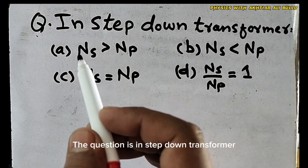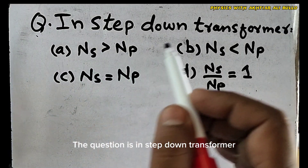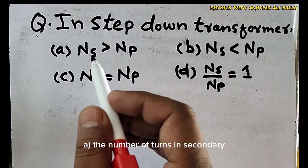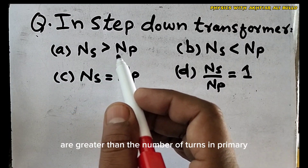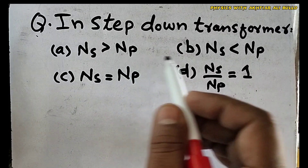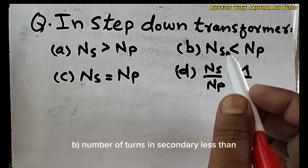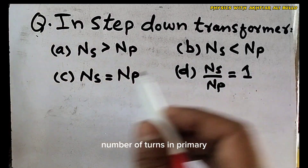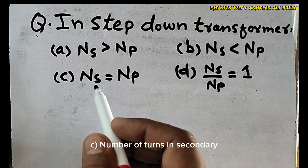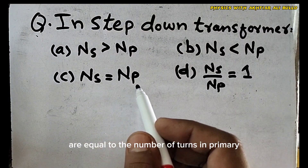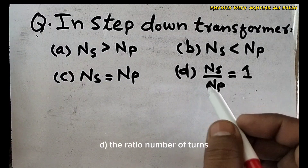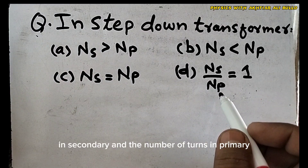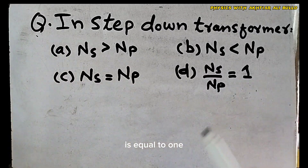The question is: in step-down transformers, A) the number of turns in secondary are greater than the number of turns in primary; B) number of turns in secondary less than number of turns in primary; C) number of turns in secondary are equal to the number of turns in primary; D) the ratio of number of turns in secondary and the number of turns in primary is equal to 1.